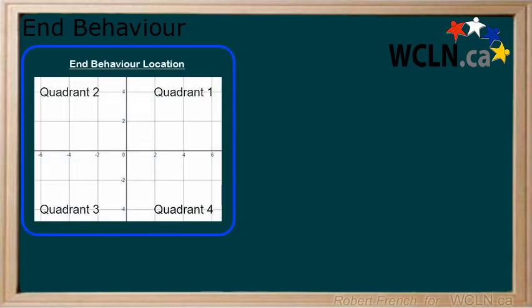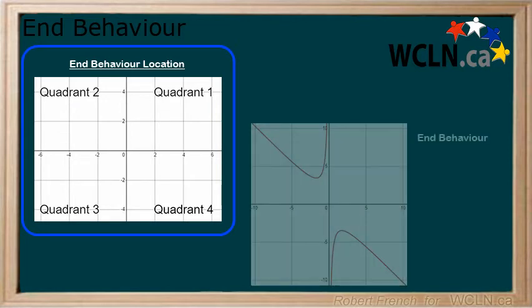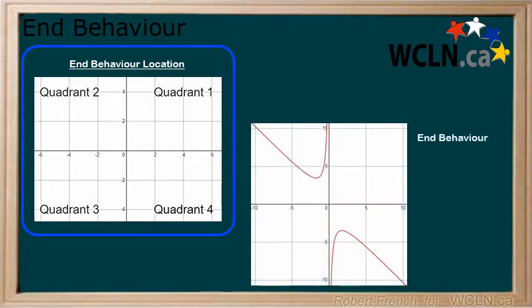The next part to describing end behavior is describing where it occurs. A plot can be broken into quadrants 1, 2, 3, and 4. When describing direction we also state which quadrant it is occurring in. Consider the following example: it starts up in quadrant 2 and ends down in quadrant 4.